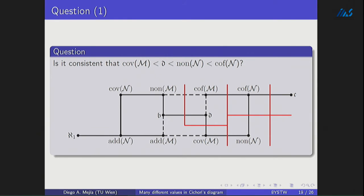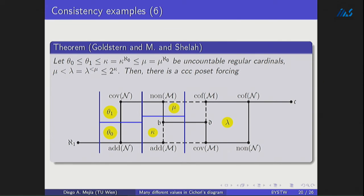Quite recently, in a work with Martin Golshani and Saharon Shelah, we achieved the following in Cichoń's diagram: we could separate all the left-hand side from the right-hand side. As I explained in the earlier examples, there was some separation, but the uniformity of meager equaled some value. Now, how to separate everything from left to right? New ideas are needed — not just preservation ideas. For this model, you can use a finite support iteration, but you have to be careful about additional things.